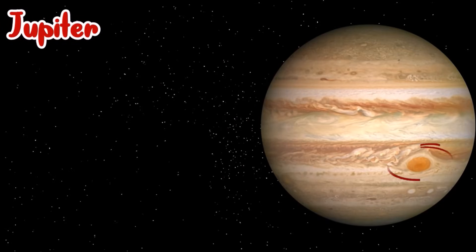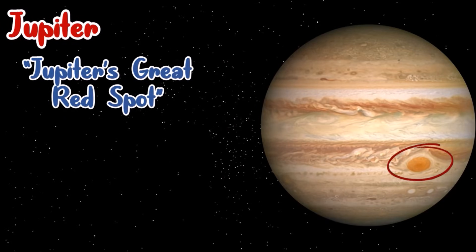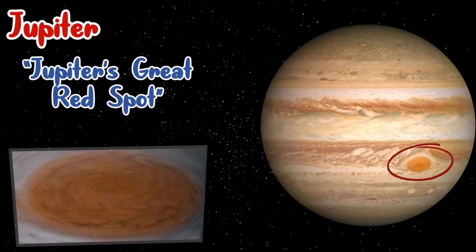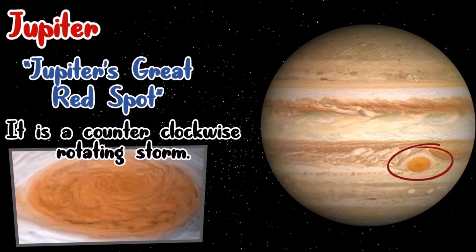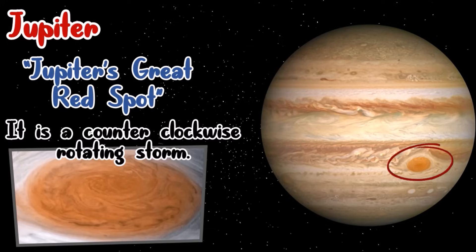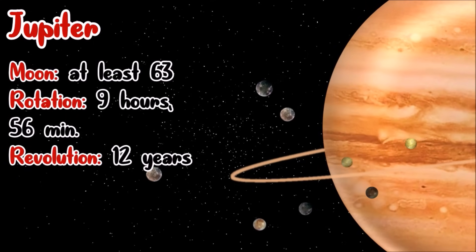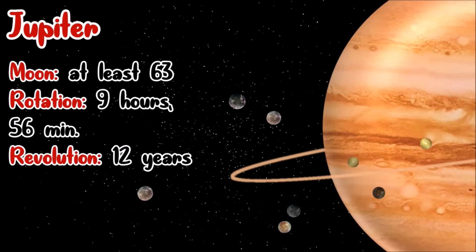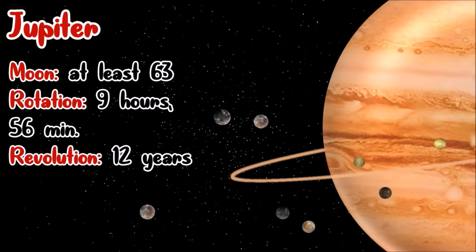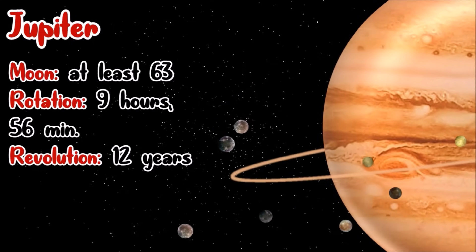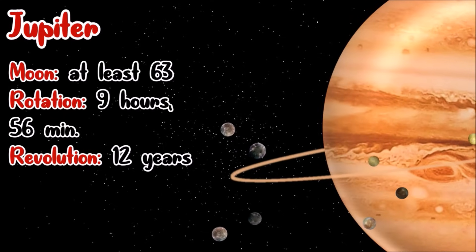Did you observe this spot on planet Jupiter? This is called Jupiter's Great Red Spot. It is actually a counterclockwise rotating storm. Jupiter's rotation requires 9 hours and 56 minutes. And Jupiter requires 12 years to complete a revolution around the Sun.